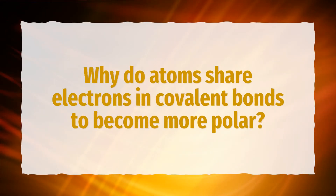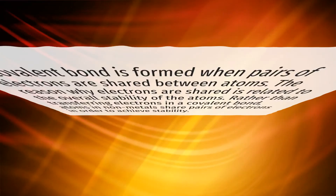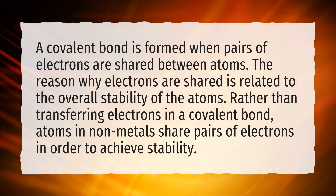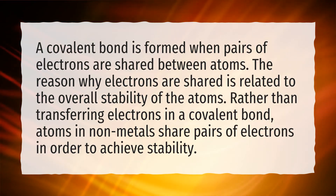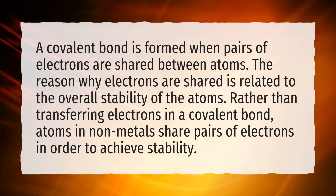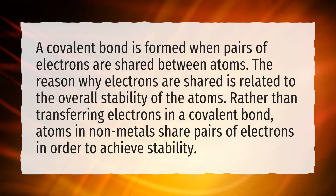Why do atoms share electrons in covalent bonds? A covalent bond is formed when pairs of electrons are shared between atoms. The reason why electrons are shared is related to the overall stability of the atoms. Rather than transferring electrons, atoms in non-metals share pairs of electrons in order to achieve stability.